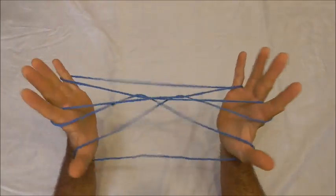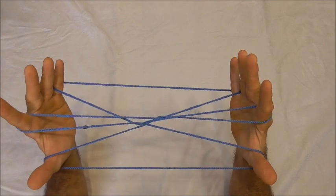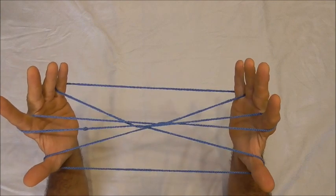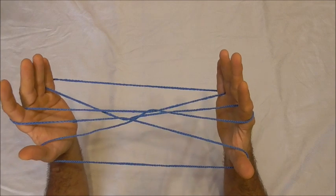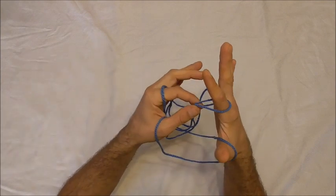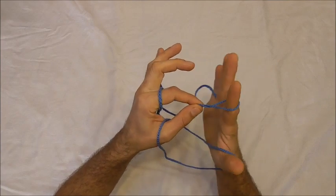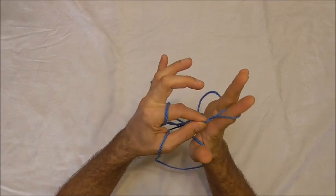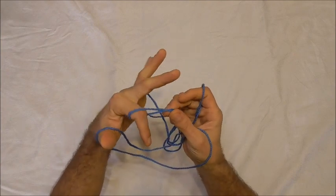Next I want to give a full twist towards me with my pointer finger so I'm just pinching that loop off and giving my pointer finger a full twist towards me.